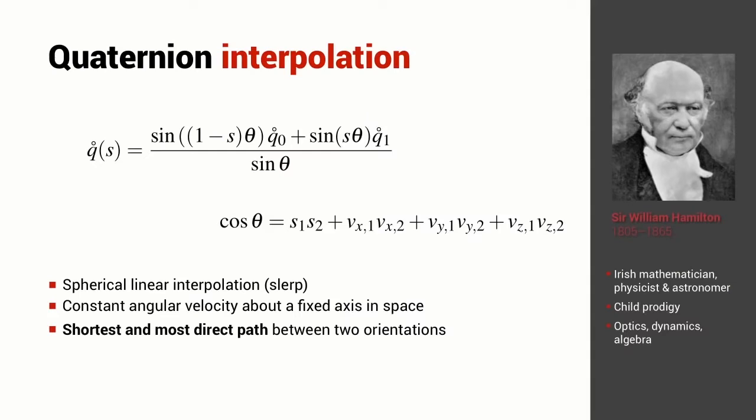We introduced quaternions and this is the equation we use to interpolate between two quaternions. Once again, it's a function of s and s varies from 0 to 1 and the important element in this equation is theta and theta is derived from the elements of the initial and final quaternion.